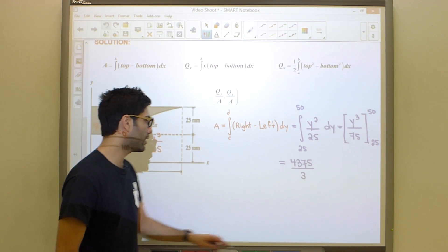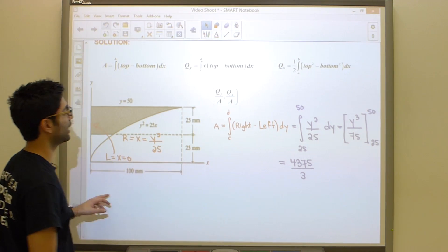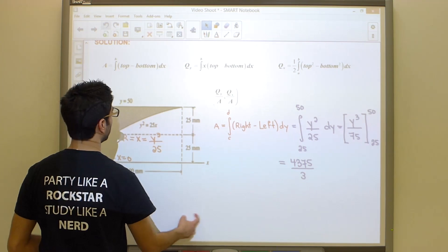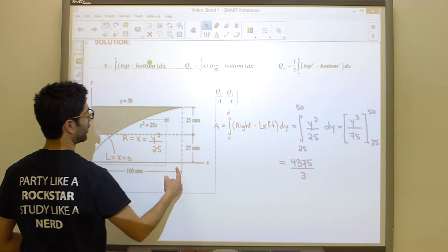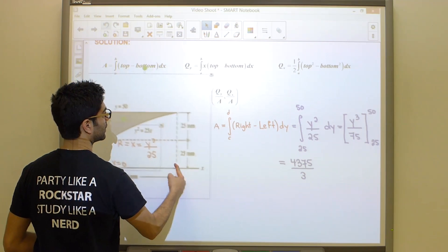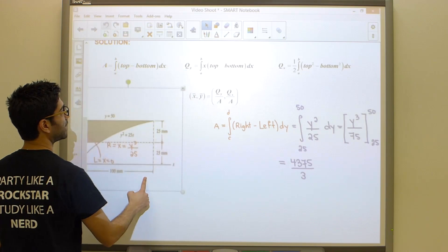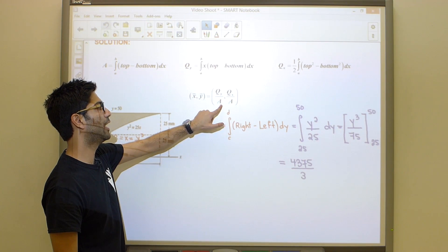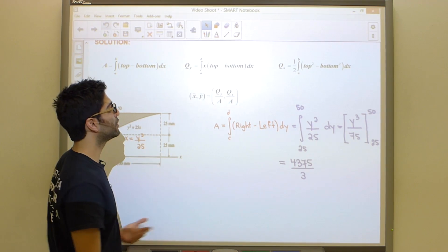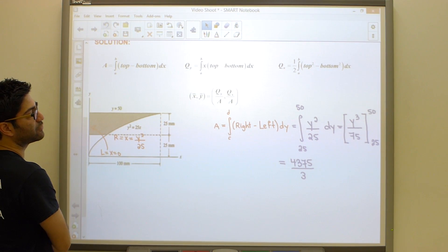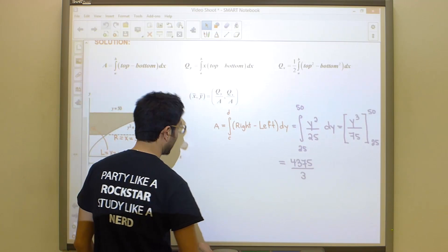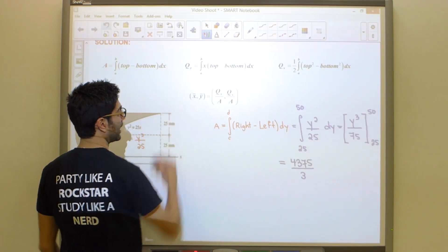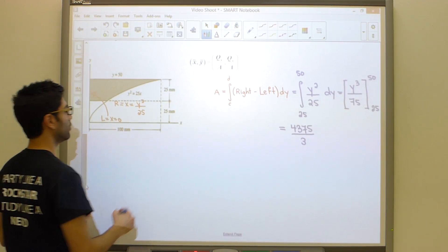Let's take a look at what our next integral is going to become. Now understand, since they're only asking us for x bar, we need two ingredients. We need Qy over A. The difference is that our Qy kind of changes. What it's going to end up becoming, the formula for Qy now, is going to be the following.